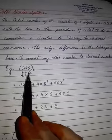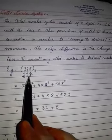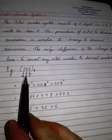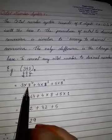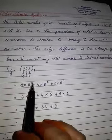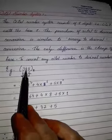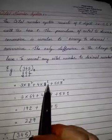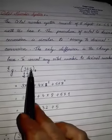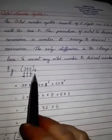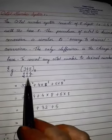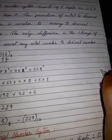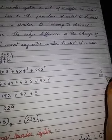Same way as we did before, we write the positional values: 5 is in position 0, then 1, 2. The first digit is 3, so 3 into 8 to the power of 2. Plus, face value 4 into base 8 to the power of positional value 1. Plus, the digit 5 into base 8 to the power of 0. So 8 squared means 8 into 8, that means 64.